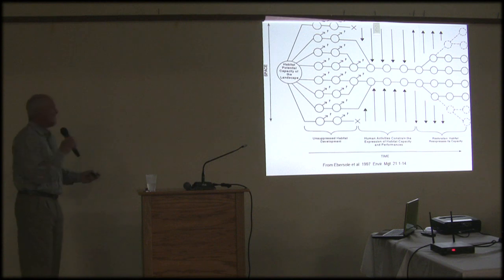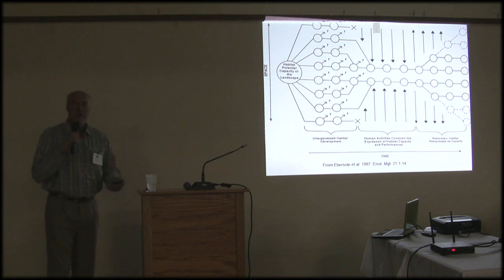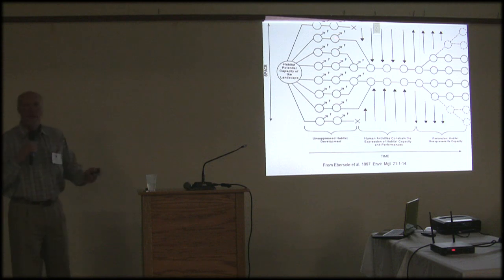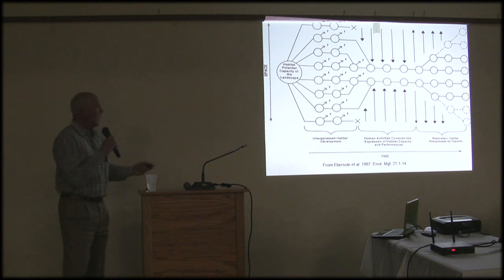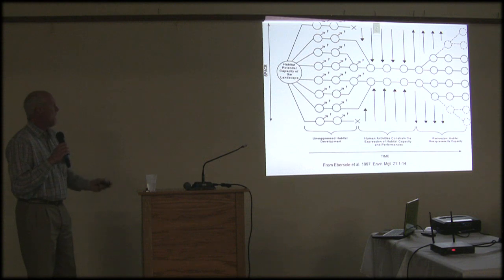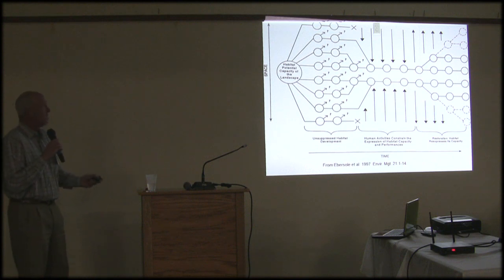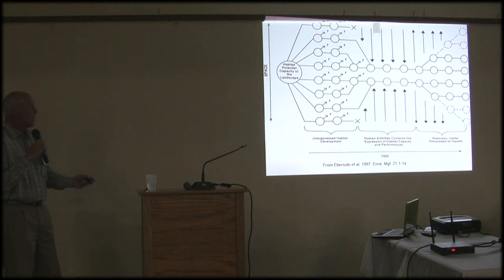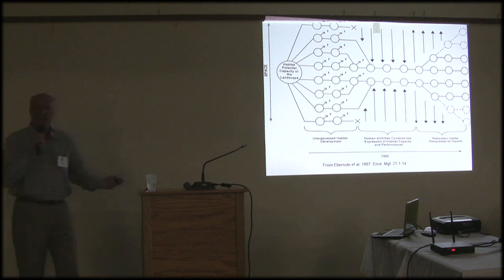What I want to leave you with is this conceptual model. Historically, in an unconstrained environment, habitat capacity reaches its full potential, and the biota — in this case coho salmon — were allowed to adapt over a diversity of habitat, setting themselves up for persistence to environmental change. Over time, anthropogenic effects have constrained those habitat opportunities, and similarly the populations have been constrained as well. The desired future condition is meaningful restoration that re-expresses habitat capacity, and we expect the population to respond accordingly.